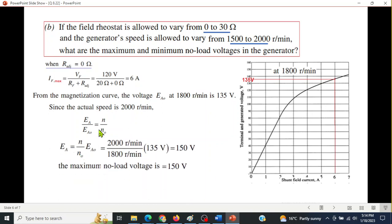So plugging in the values, or to find Ea from here we get this equation. Now we will plug in the values. 2000 is the actual speed now. This is the graph speed, this is the graph voltage, so the actual voltage will be 150. So actual output voltage, or at no load, is 150, and this will be, of course, the maximum voltage.